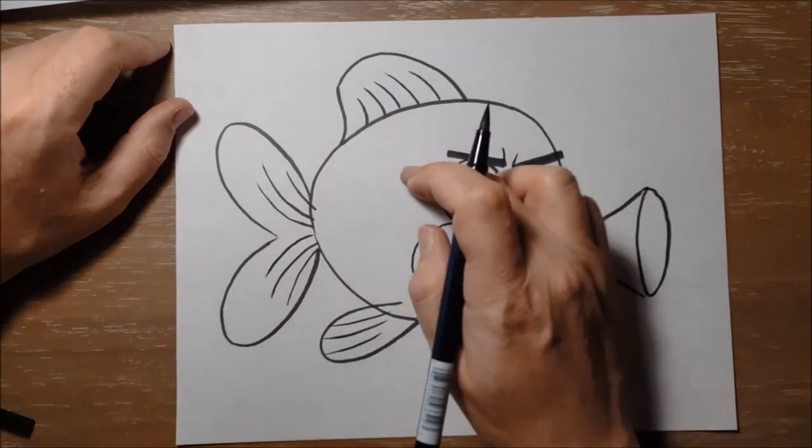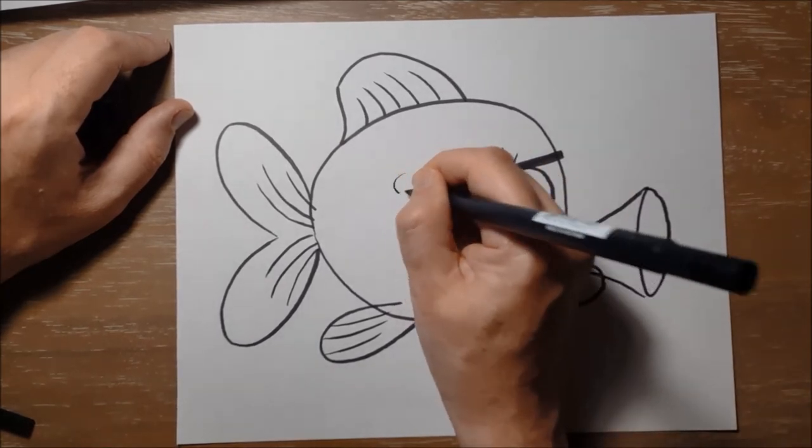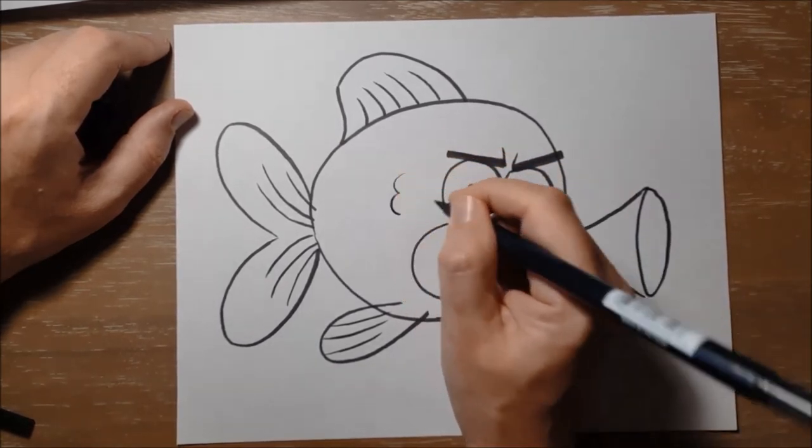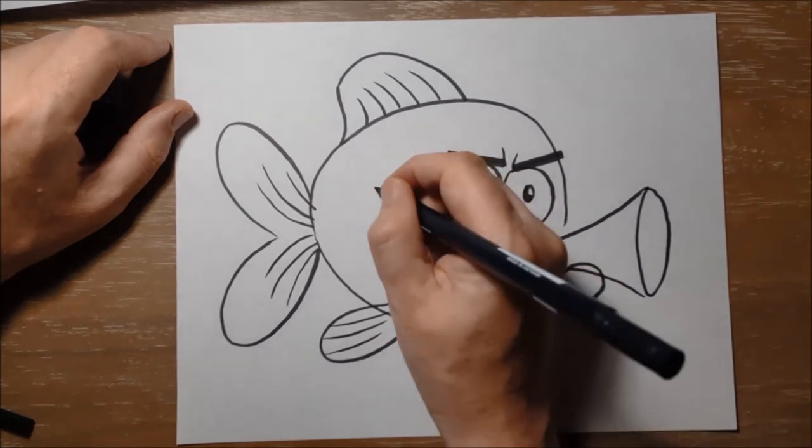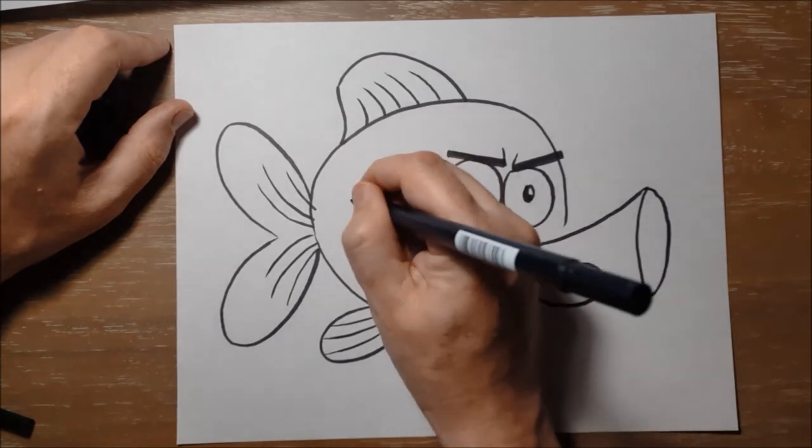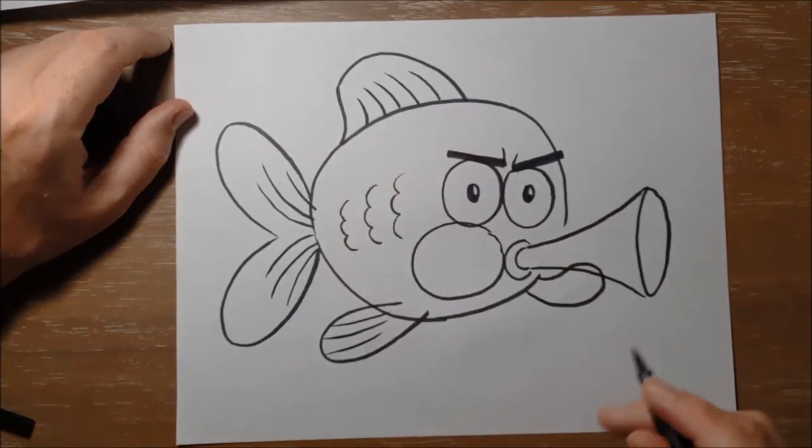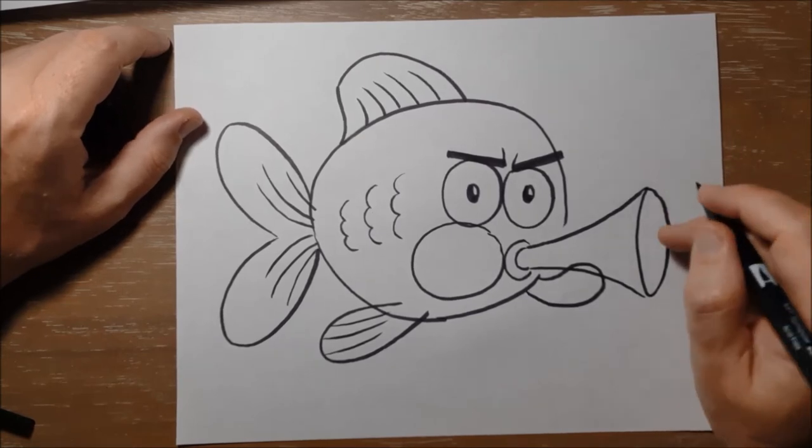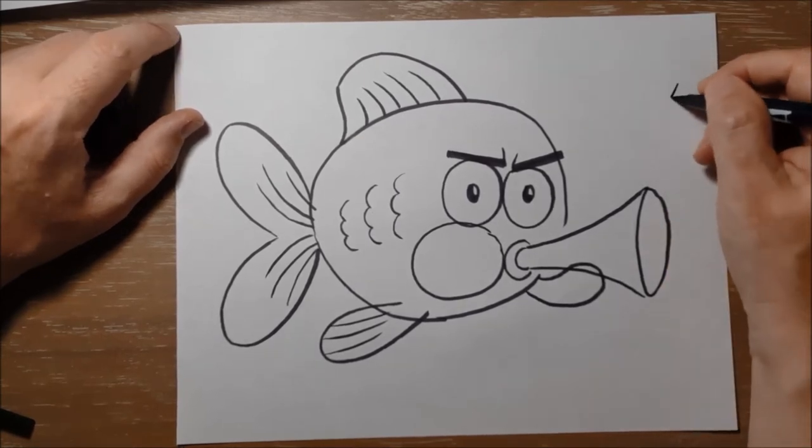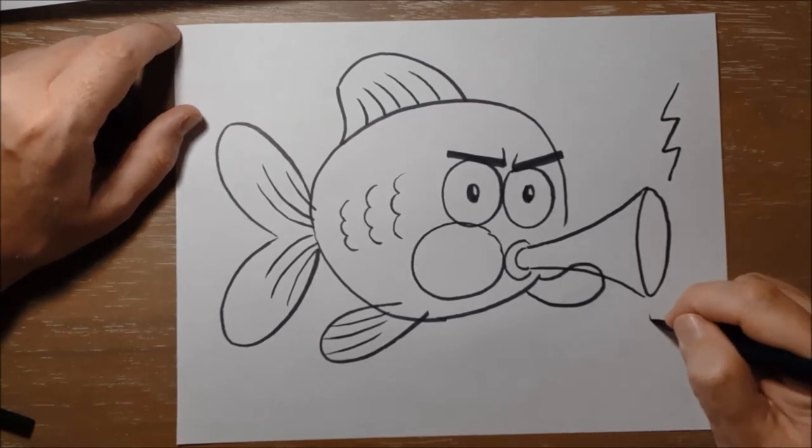And the fish has some scales on its body. Make a curving line, like this. The fish is making noise with its horn. Make a zig-zag line, like this, to show the noise.